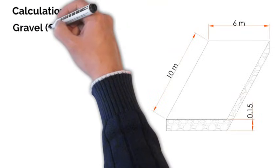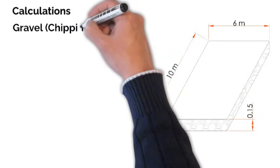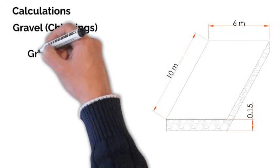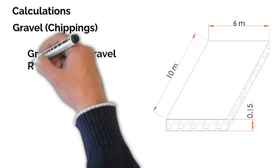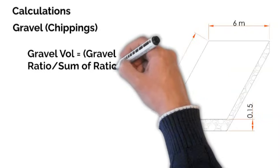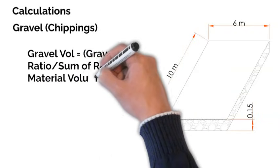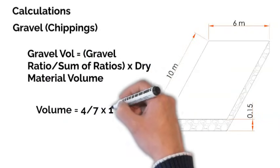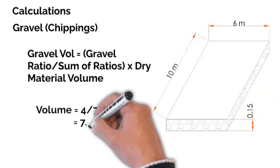The last of the three materials to calculate is the coarse aggregates, or gravel. Based on the simple fraction, the gravel is calculated from 4 over 7 multiplied by 13.86, which equals 7.92 cubic meters.